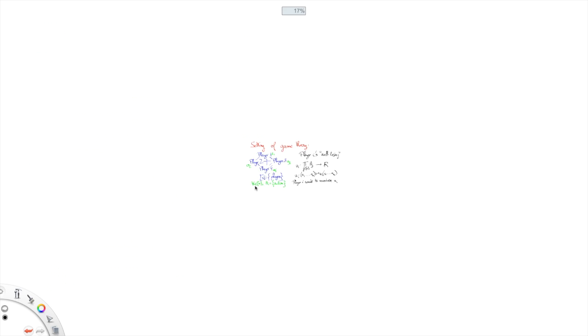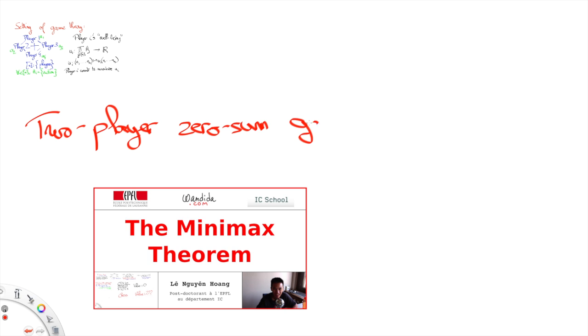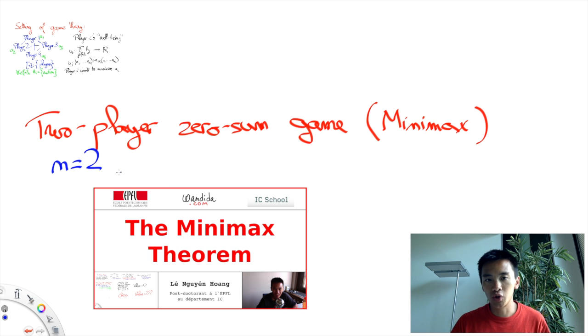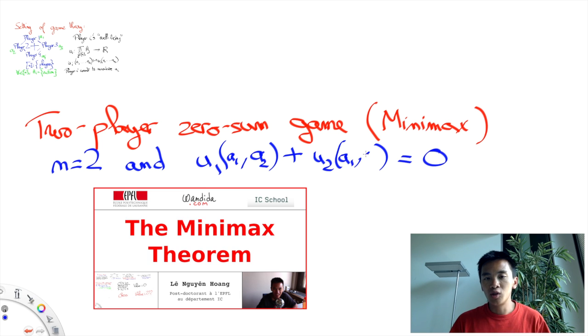Note that we retrieve von Neumann's two-player zero-sum game theory that we discussed in a previous video, assuming n equals 2, and the fact that you have this zero-sum. So we can write this as u1 plus u2, taken at the same argument, so for instance a1, a2. This should always equal to zero for all inputs, that is, for all actions a1, a2.